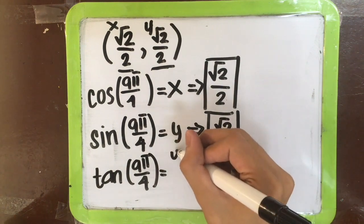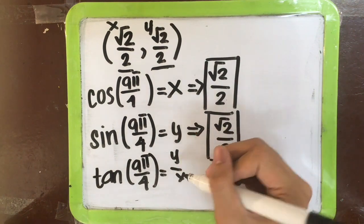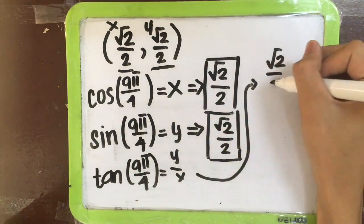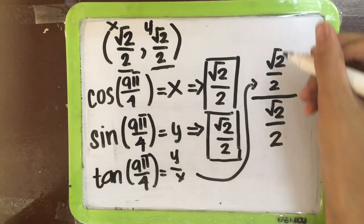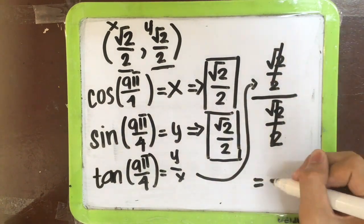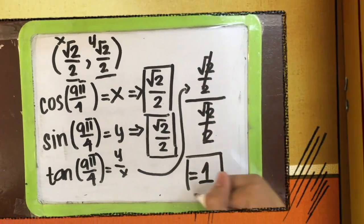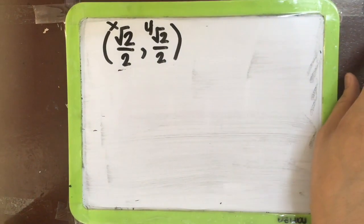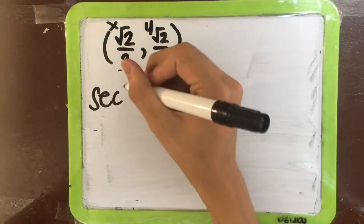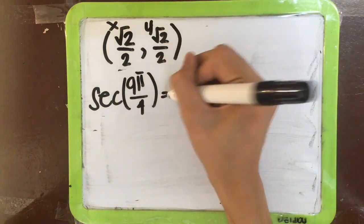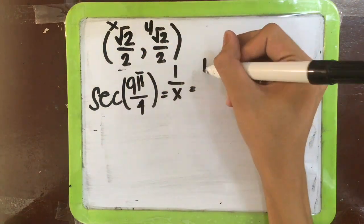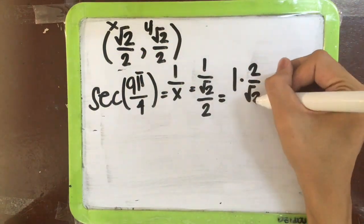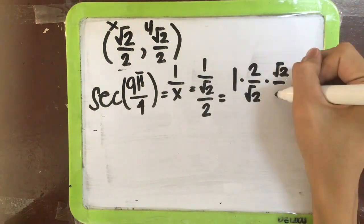For tangent, it equals y divided by x. When you divide the values, it becomes 1. For secant, it equals 1 over x, so 1 divided by √2 over 2 is equal to √2.